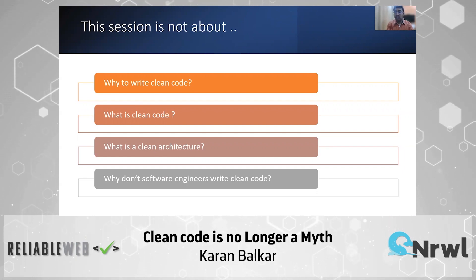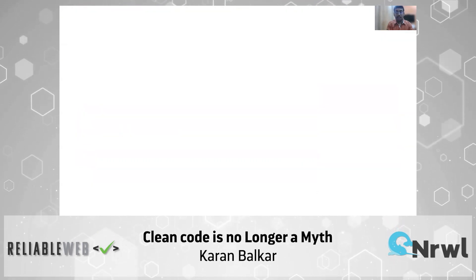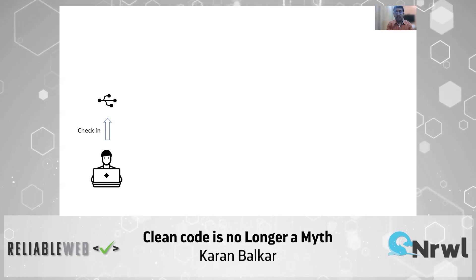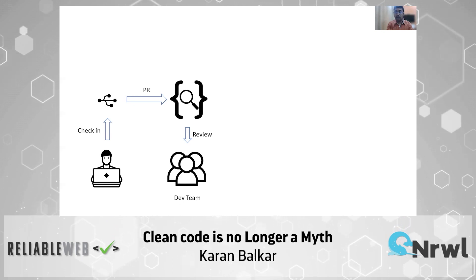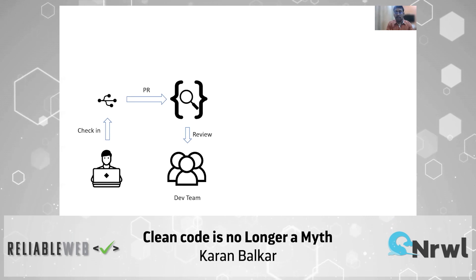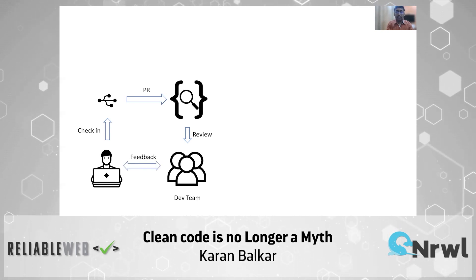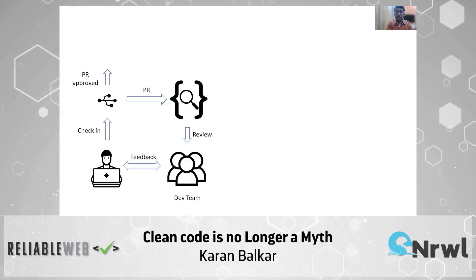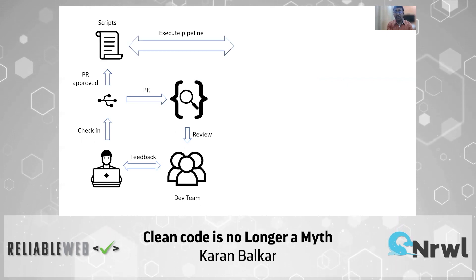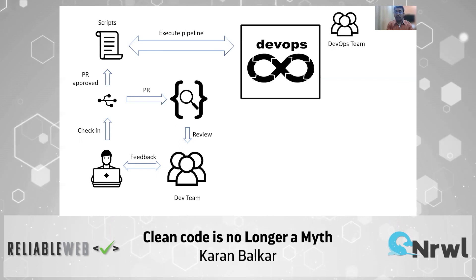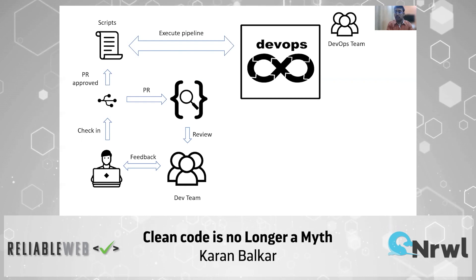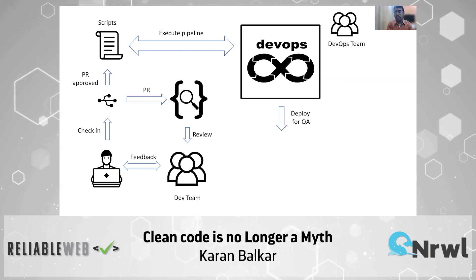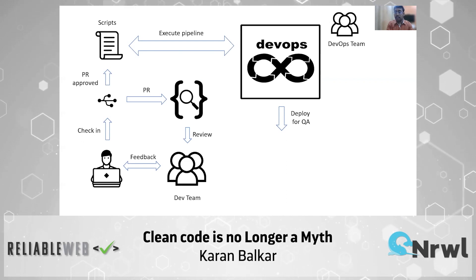Here is a trimmed-down version of a day in the life of a software developer. A developer checks his code into a centralized repository and raises a pull request, which is then reviewed internally by a team of developers. These developers provide feedback on a continuous basis, based on which he either refactors his code or modifies the logic, and this goes on until the PR has been approved. Once the PR is approved, it triggers build scripts which execute a pipeline monitored by the DevOps team. The output of this process is a binary or artifact, which is then deployed to a QA environment.